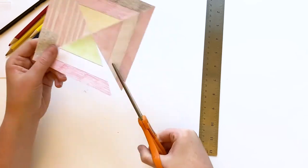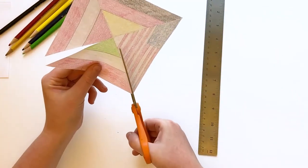Use scissors to cut along each folded line, making sure not to cut all the way to the center.